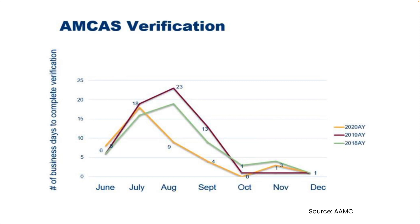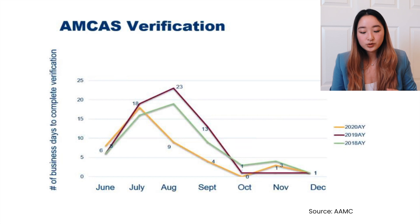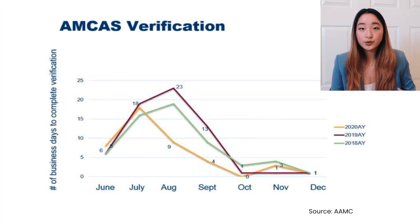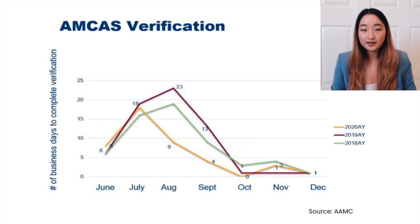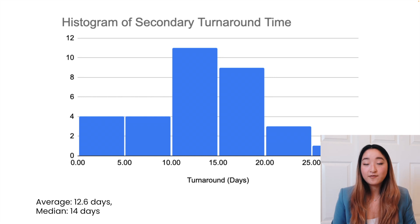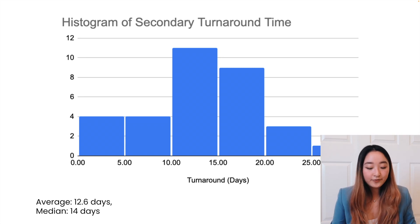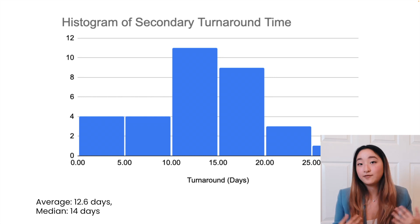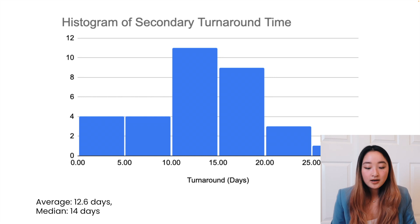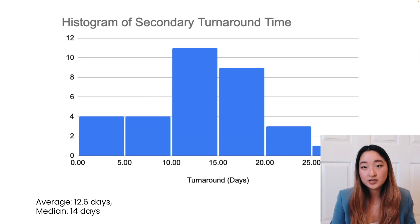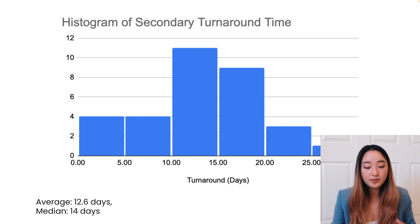Finally, here's a histogram of my personal secondary turnaround time. I applied to 33 schools and completed 32 secondaries, with an average turnaround time of 12.6 days and a median of 14 days — sticking closely to the two-week rule. Some applications took up to 30 days, while others I completed in under five days because they only had one or two essays I'd already pre-written. The bulk of them I completed within that two-week timeframe.